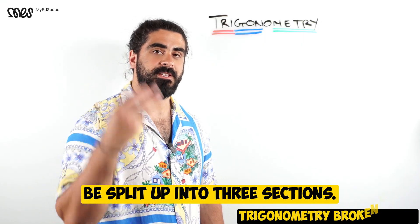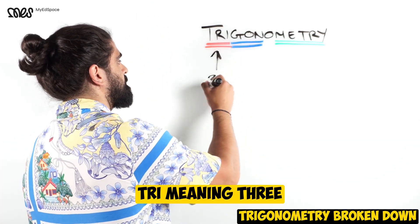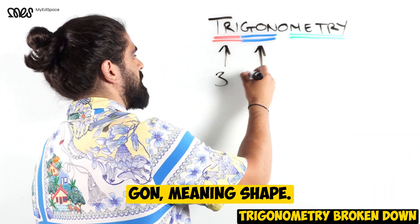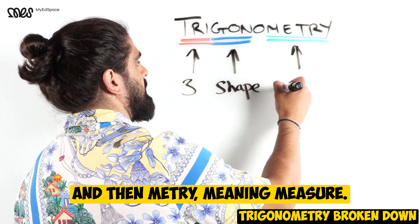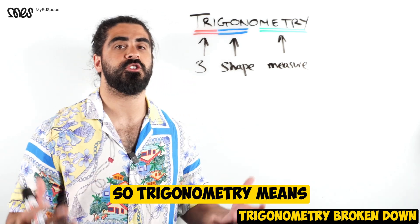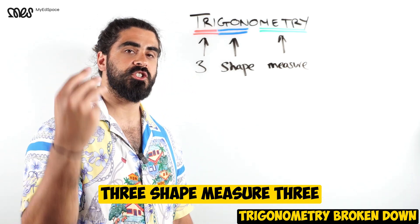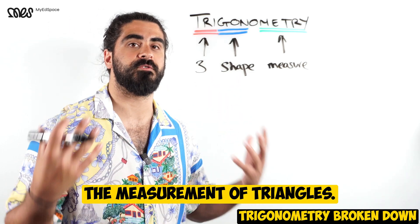Now the word trigonometry can be split up into three sections. Tri meaning three, gon meaning shape, and metri meaning measure. So trigonometry means three shape measure - the measurement of triangles.